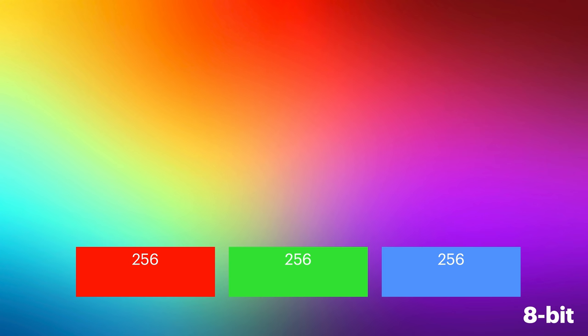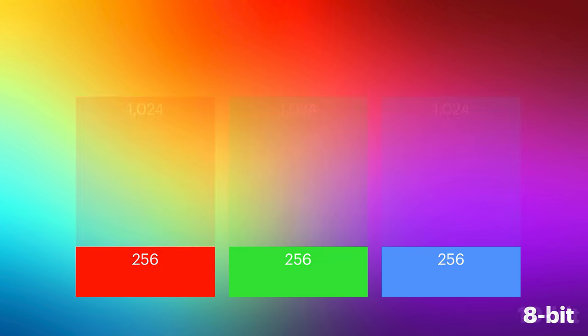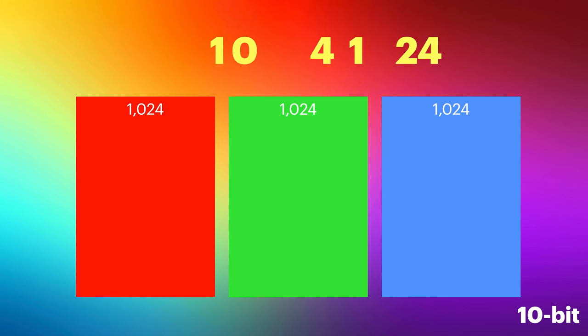With 10-bit video, however, instead of a max of 256 tonal values possible for each channel of red, green, and blue, it increases dramatically to 1024. This results in the ability to capture over 1 billion different colors when filming in 10-bit.